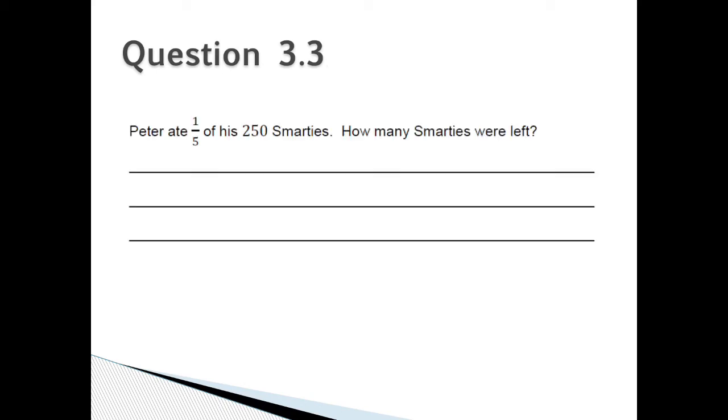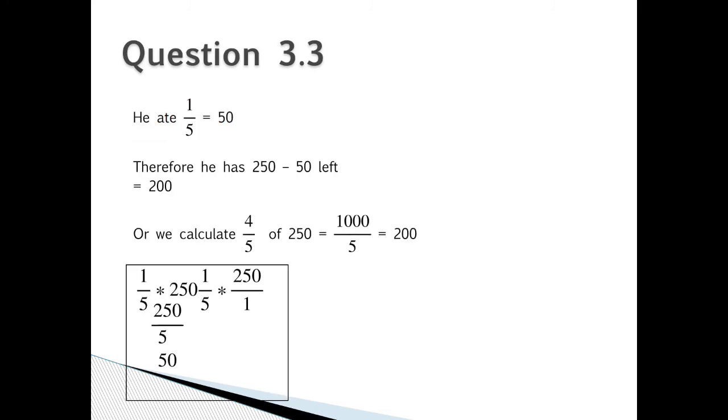Question 3.3: Peter ate a fifth of his 250 Smarties. How many Smarties were left? Question 3.3: He ate a fifth which is equal to 50, therefore he has 250 minus the 50 that he ate. What is left over is 200. Or we can calculate: 4 over 5 of 250 is 1,000 divided by 5, which will give you 200. Or you can also calculate 1 over 5 times 250. 1 over 5 times 250 over 1, therefore it is 250 over 5, and your answer is 50, which you will subtract from the 250.